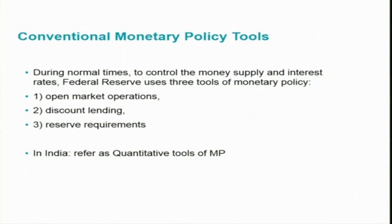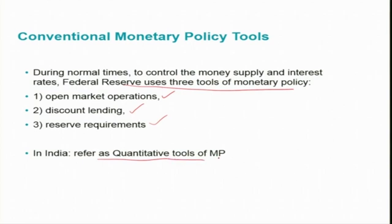During normal times, the Federal Reserve uses mainly three conventional tools to control the money supply and interest rates: open market operations, discount lending, and reserve requirements. In India, these are referred to as quantitative tools of monetary policy.